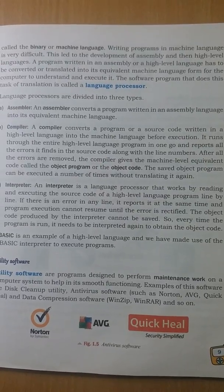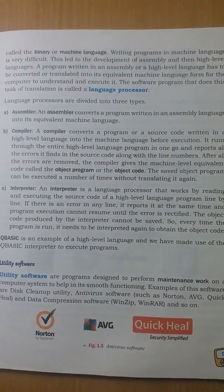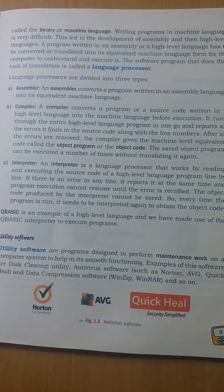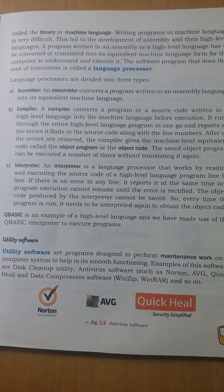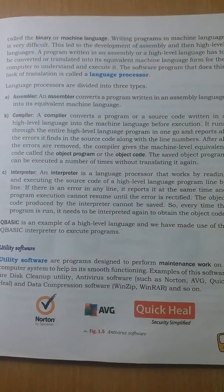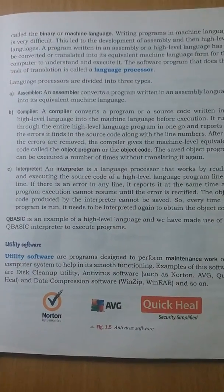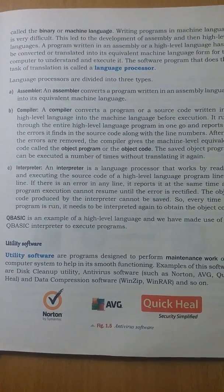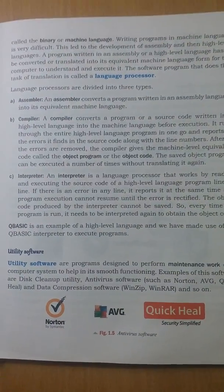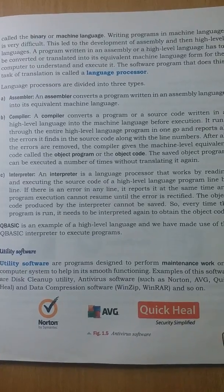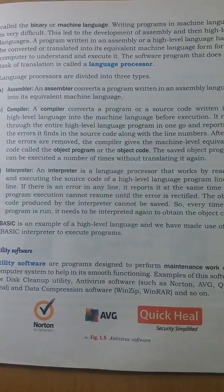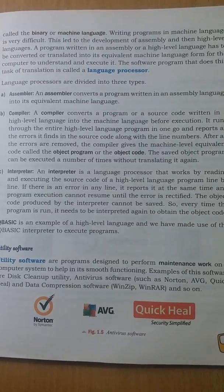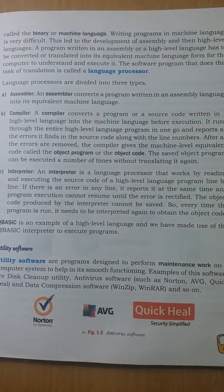The other two types of translators are compiler and interpreter. Both convert high-level language programs into machine language. The difference is that a compiler converts the entire high-level language program into machine language in one go.